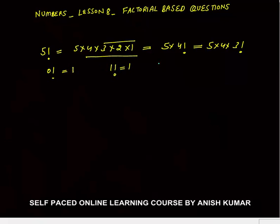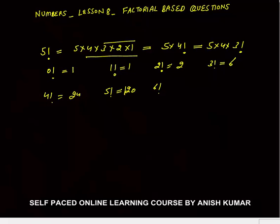1 factorial is 1, 2 factorial is 2, 3 factorial is 6, 4 factorial is 24, 5 factorial is 120, 6 factorial is 720, and 7 factorial is 5040. These values you must know straight away.